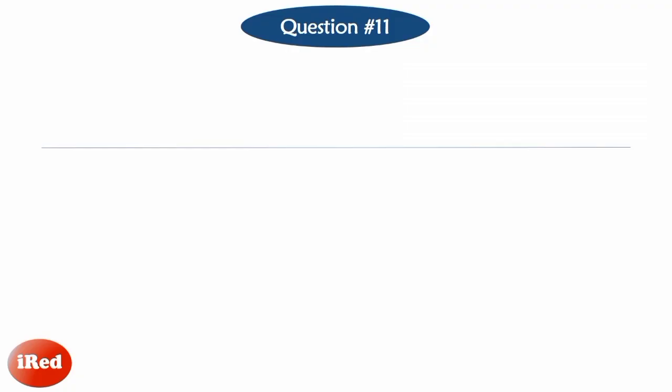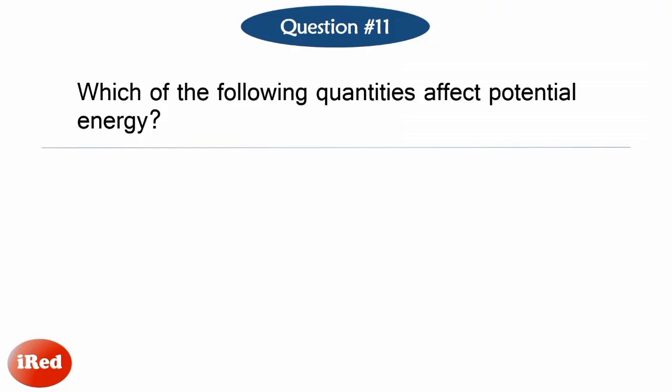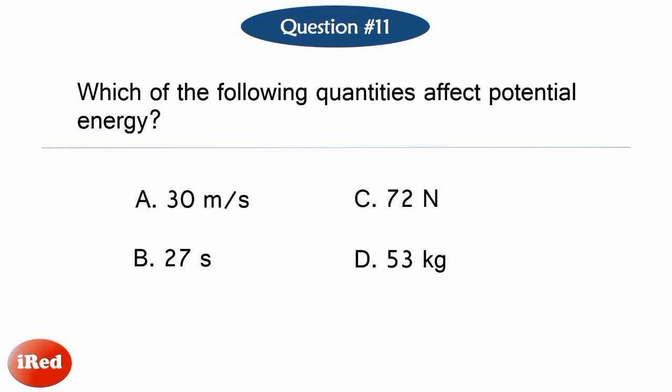Number 11. Which of the following quantities affect potential energy? Letter A, 30 meters per second. Letter B, 27 seconds. Letter C, 72 newtons. Or Letter D, 53 kilograms.